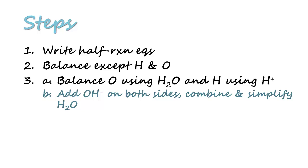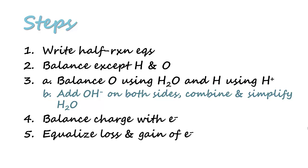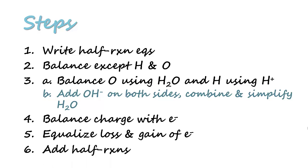For every H⁺ that is added, you need to add the same amount of OH⁻ on both sides, and you will combine OH⁻ with H⁺ and simplify the water in each of the half reactions. Then you proceed similar to the acidic condition by balancing the charge using electrons, equalizing the loss and gain of electrons, and then adding the half reactions.